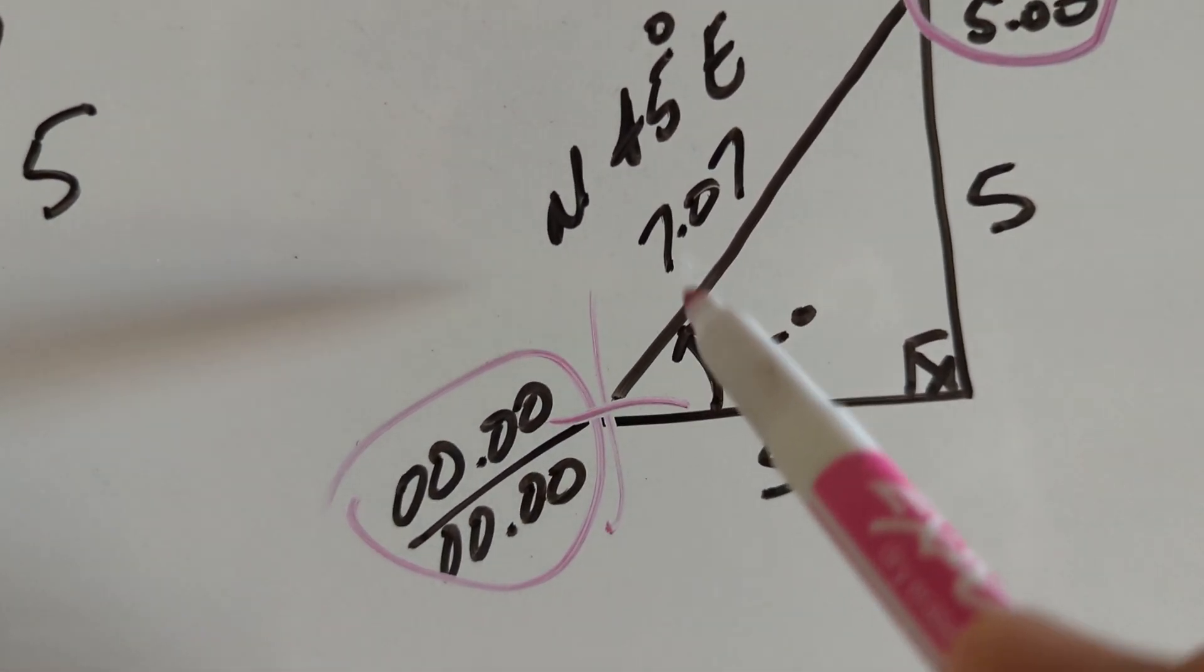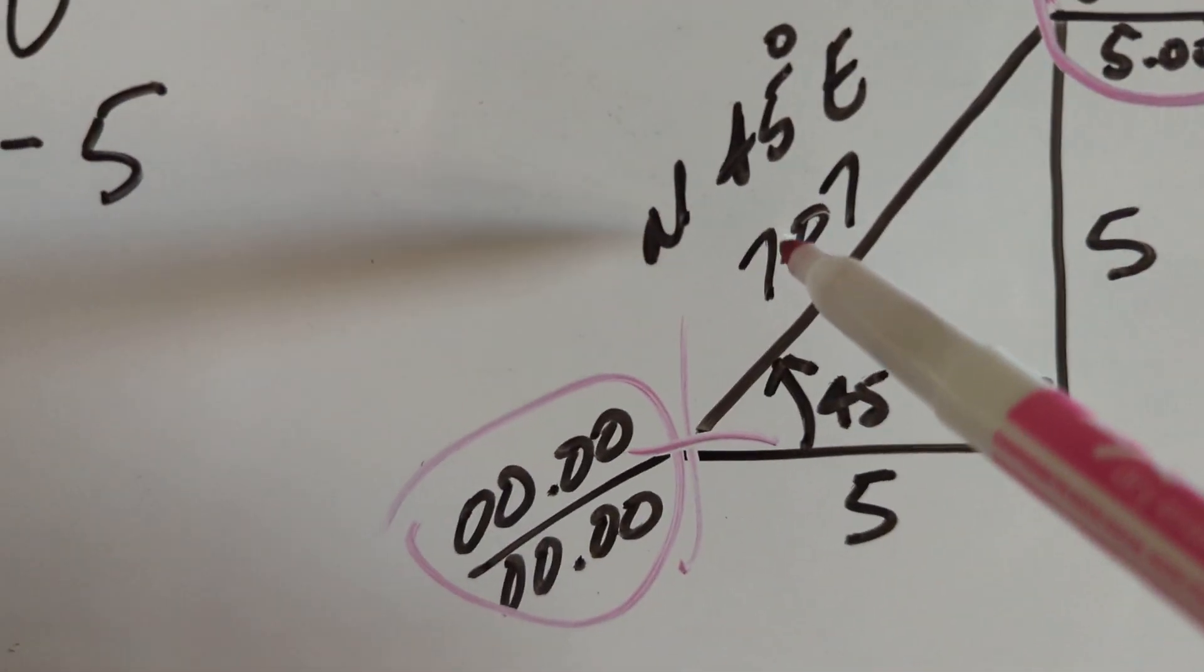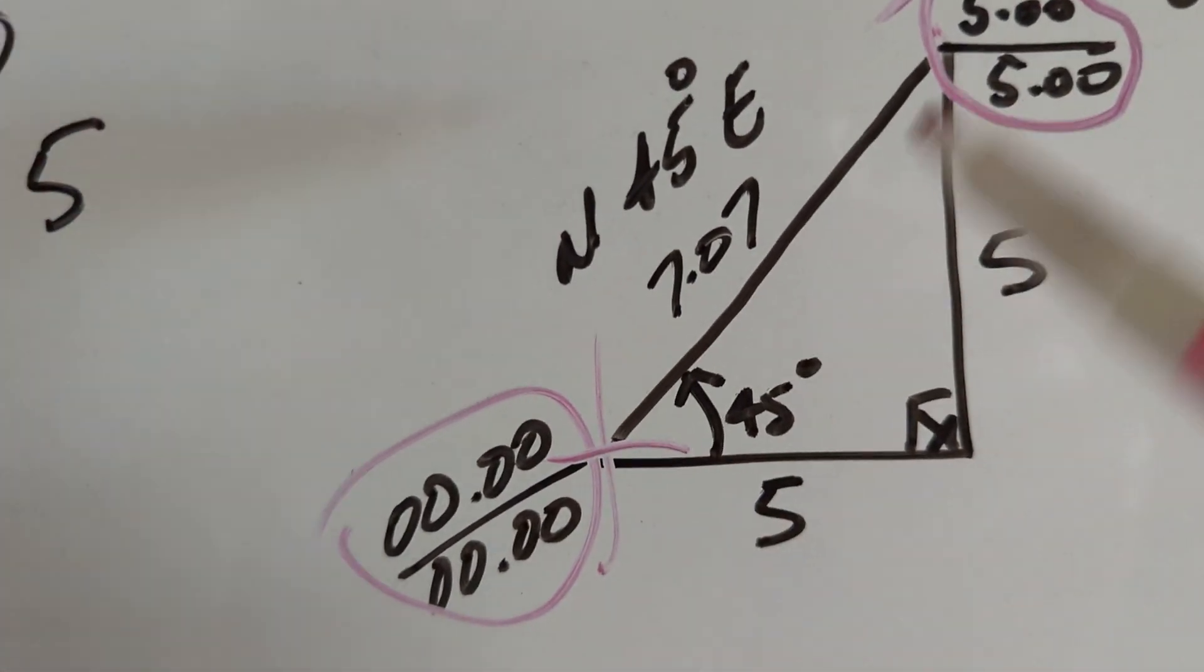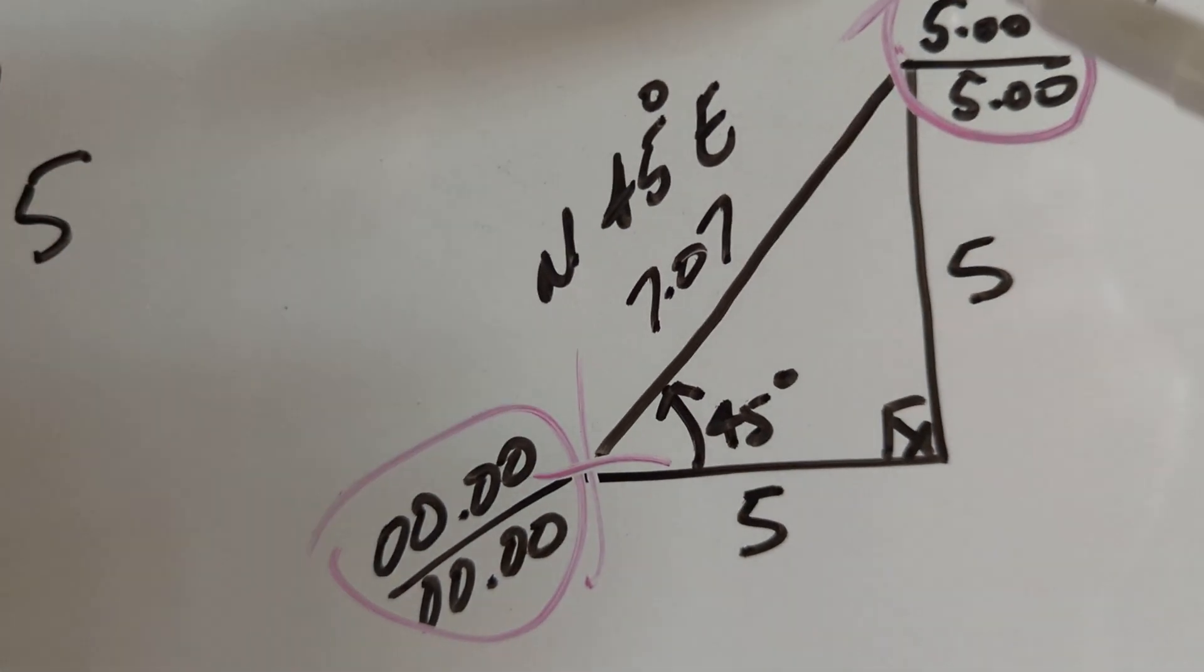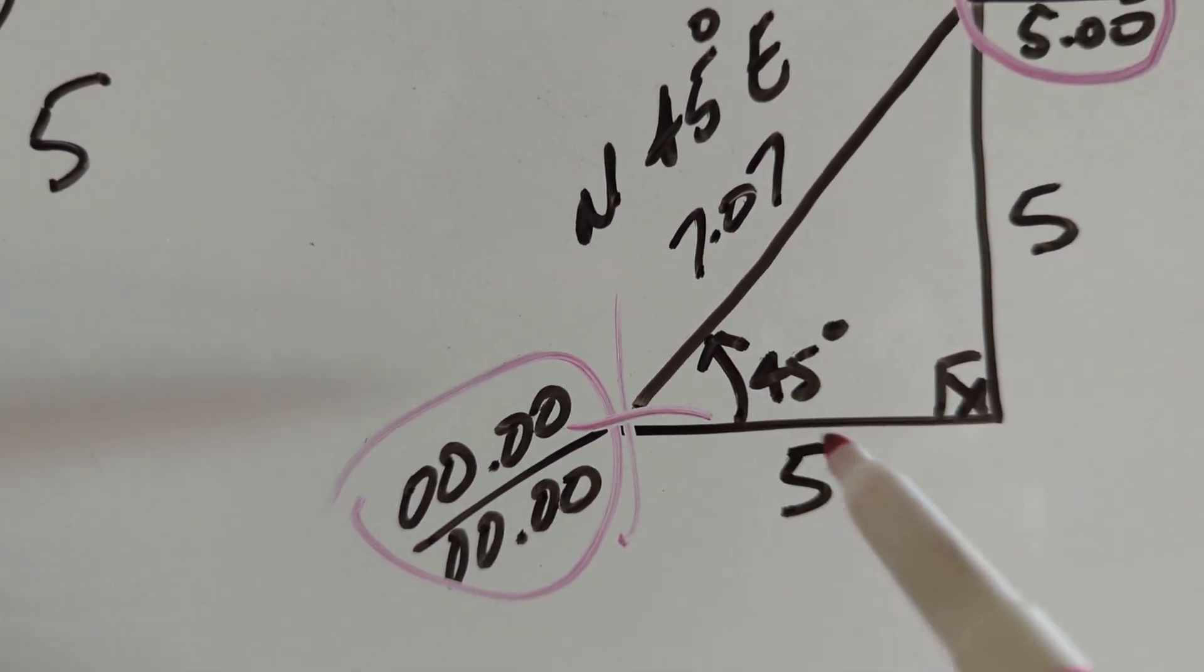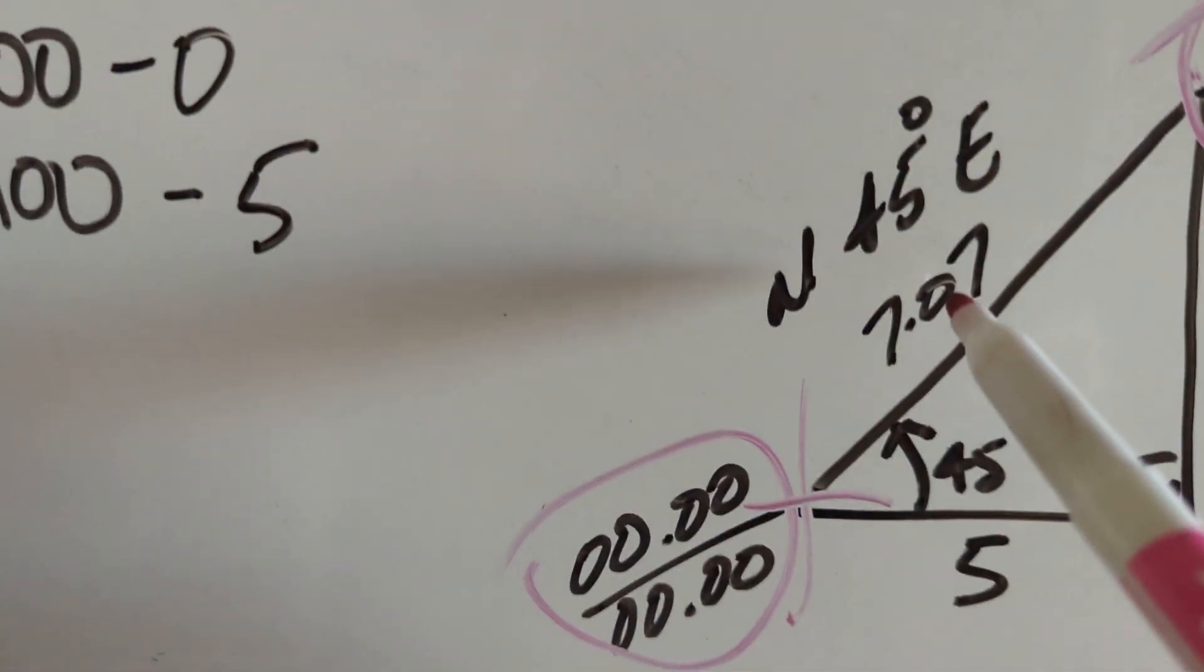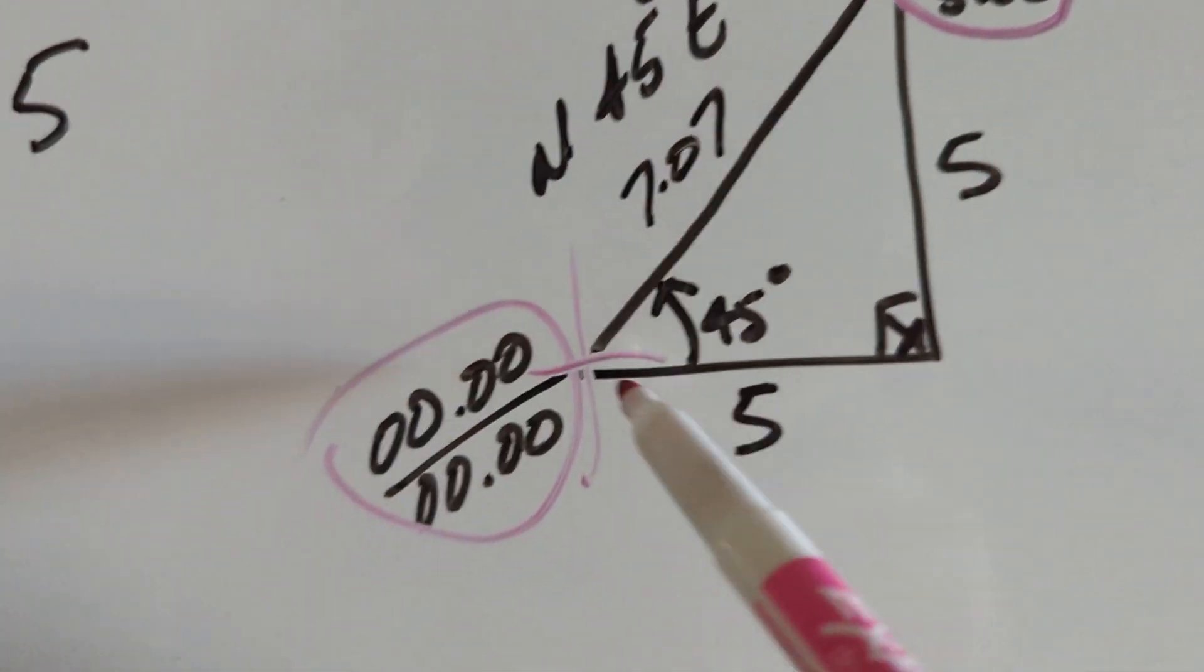So it'd be 45 sine times 7.07, because five by five is the hypotenuse of 7.07. This way it just makes it easy to check the math. And the answer is five. So that's the difference, is five. Same thing. 45, get the cosine, times the distance, equals five again.